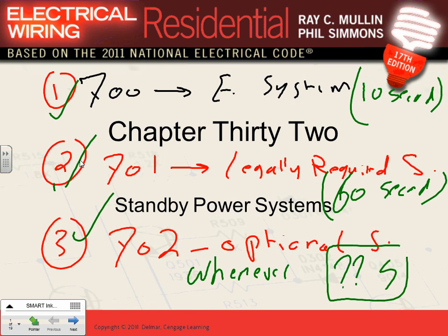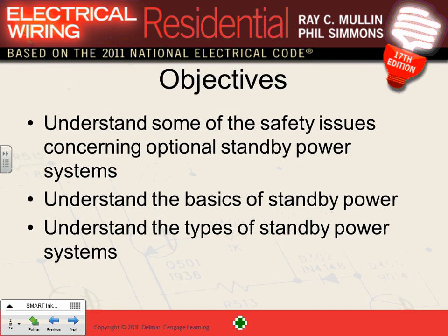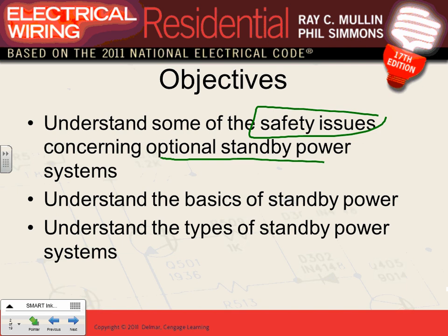Today we're talking about standby power systems. There are three types: emergency, legally required, and optional standby. The most important thing with standby power systems is safety. Most of the systems we do in dwellings fall under the optional standby system, Article 702. Let's talk about safety first.